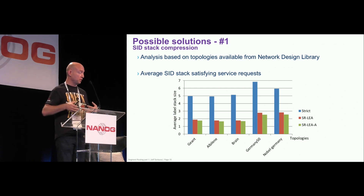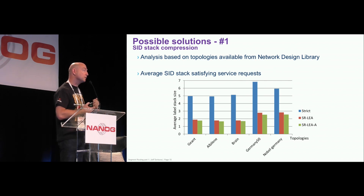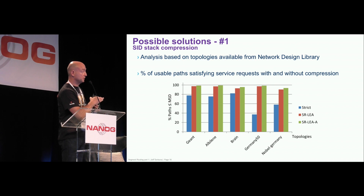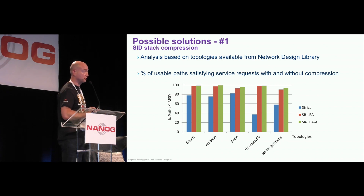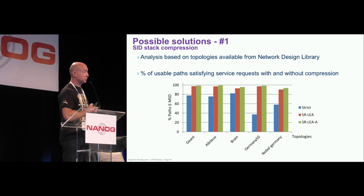If you analyze the topology versus service requested and average SID depth, using basic node or link-per-link encoding you get to an average SID depth of seven, which leaves you out of low-end merchant silicon and would be supported on some high-end and probably proprietary silicon. The algorithm compresses SIDs by replacing longest paths with shortest SID depth using paths where SPF could be used rather than explicit routing. When you apply the SR-LIA algorithm, you could reach pretty much 95% of services that can be delivered on your existing infrastructure.